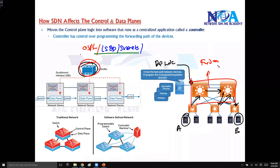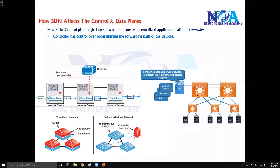Networking devices only know about their connected links — meaning the device knows which links it is connected to and from those links it can reach the controller. So they have very limited or only basic information.